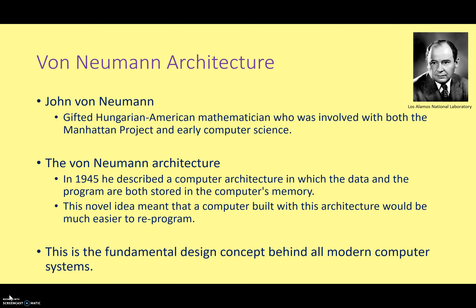One of the great people involved in the early days of computer technology was John von Neumann. He really was one of the great intellects of the 20th century — a very gifted American-Hungarian mathematician who made great advances in set theory and game theory, and was also involved in the Manhattan Project, which was the project to build the first atomic bomb. In the context of this lesson, we want to look at his contribution to computer science, which is what is now credited as the von Neumann architecture. In 1945, he described a computer architecture in which both the data and the program were stored in the computer's memory.